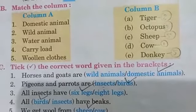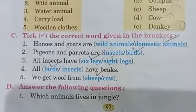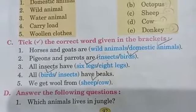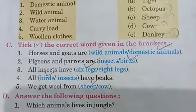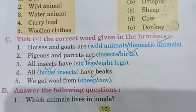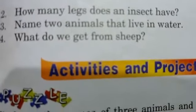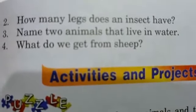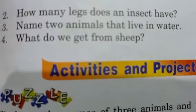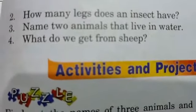Now the questions and their answers. The first question is: which animal lives in the jungle? Second: how many legs does an insect have? Third: name two animals that live in water. And fourth: what do we get from sheep?